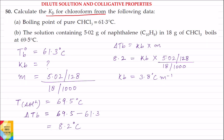We have to calculate the value of Kb for chloroform. Given data: boiling point of pure chloroform is 61.3 degree centigrade, and the solution containing 5.02 gram of naphthalene in 18 gram of CHCl3 boils at 69.5 degree centigrade.